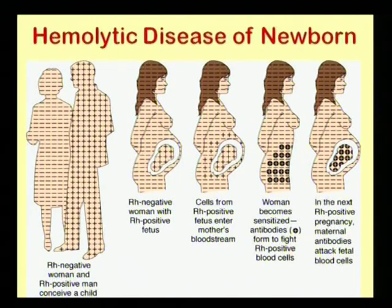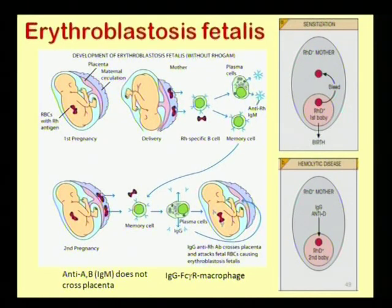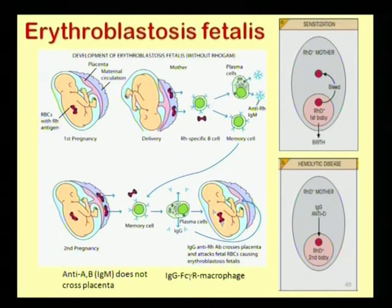In the second pregnancy, the lady again has an 85% chance of carrying an RH positive baby. By this time, the IgM in the mother has switched to IgG, and in the second fetus, the IgG can cross the placenta and create serious damage as described in the mechanism.